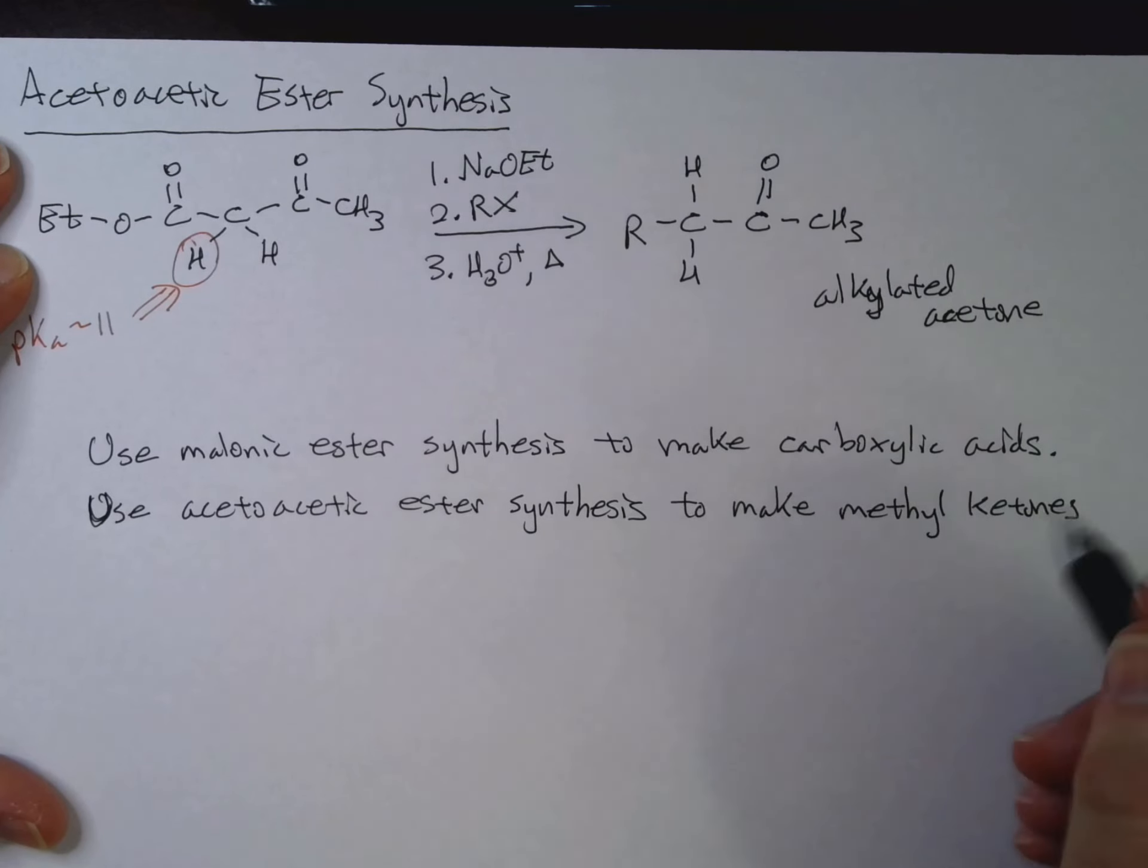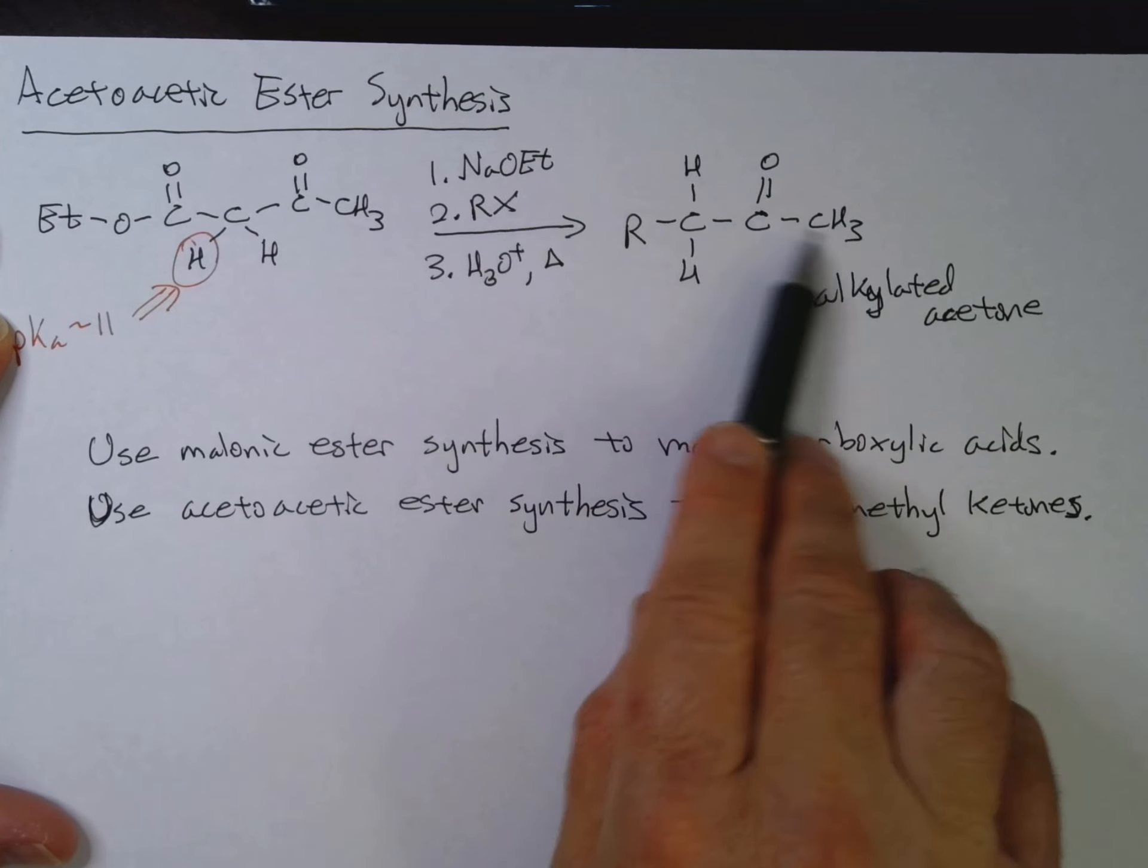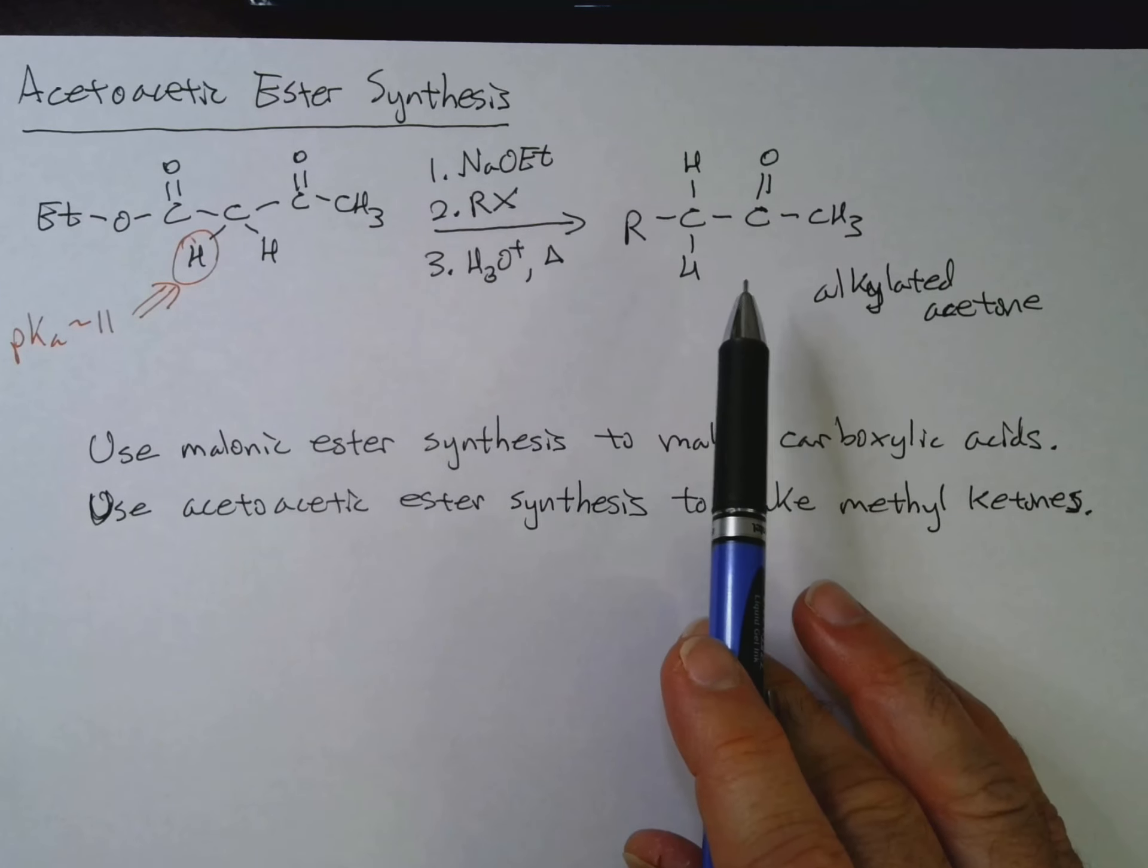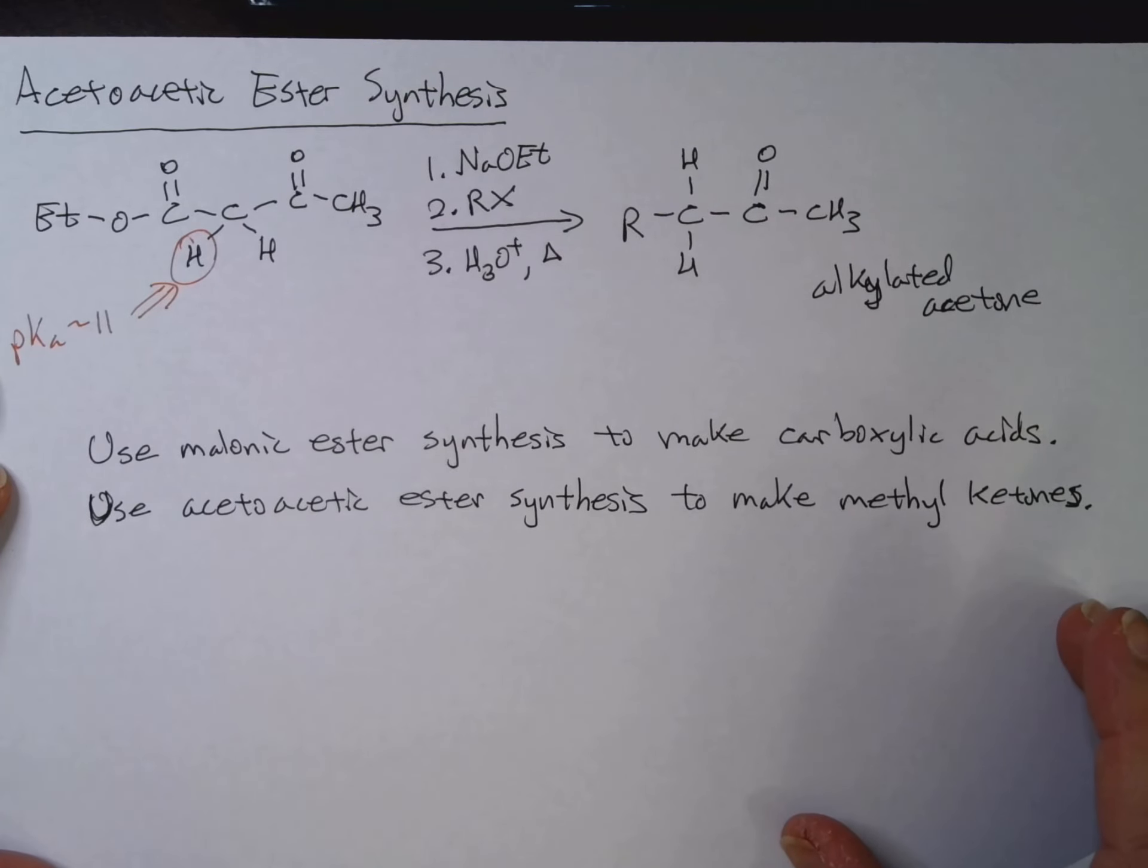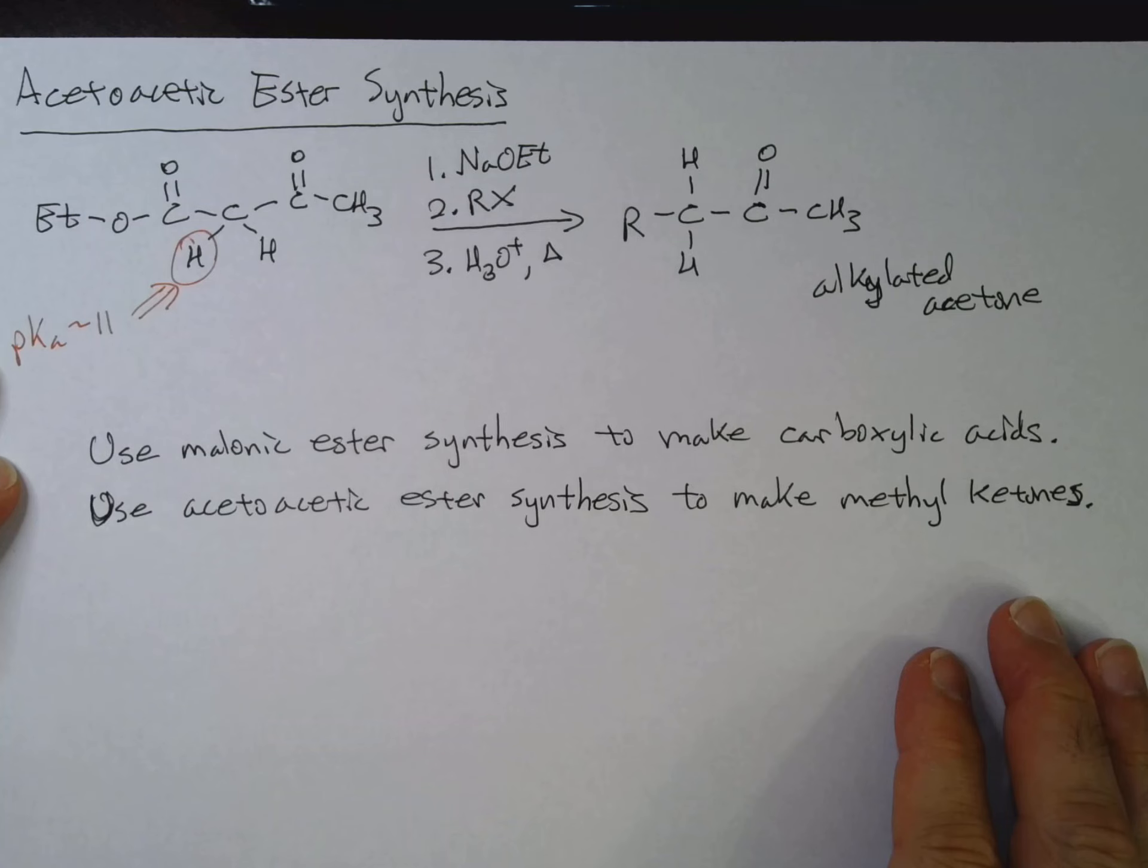Use acetoacetic ester synthesis to make methyl ketones. Let me scoot that over. Sorry about that. So you can see here that our alkylated acetone here, well, it's a methyl ketone with something here. So it's a way to get a couple of, you know, to make it more complex, you know, have a branched chain at the alpha, not the alpha carbon. So those are some ways of making use of alkylation at the alpha carbon.